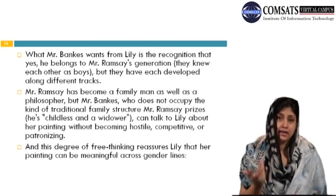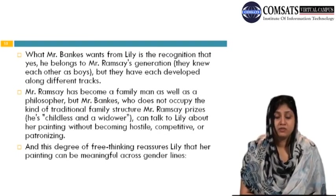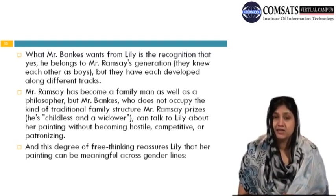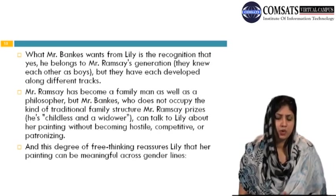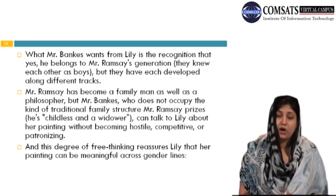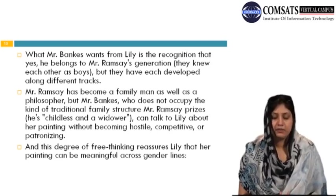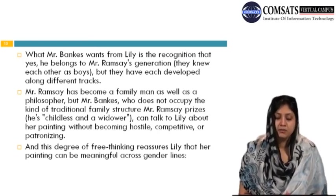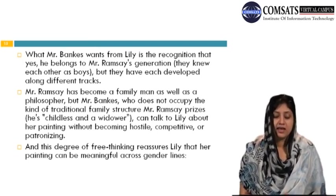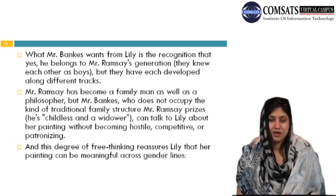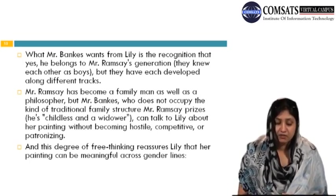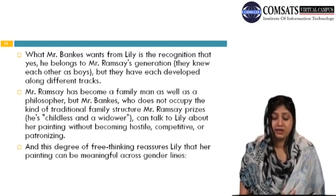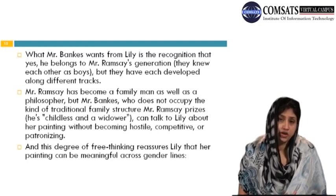Mr. Banks was anxious for the sake of his friendship with Lily Briscoe and in order to clear himself from the imputation of having dried and shrunk — for Ramsey lived in a welter of children whereas Banks was childless and a widower. He was anxious that Lily should not misperceive Ramsey, a great man in his own way, yet should understand how things stood between them. Mr. Banks, being childless and a widower, can talk to Lily about her painting without becoming hostile, competitive, or patronizing. This degree of free thinking reassures Lily that her painting can be meaningful across gender lines.